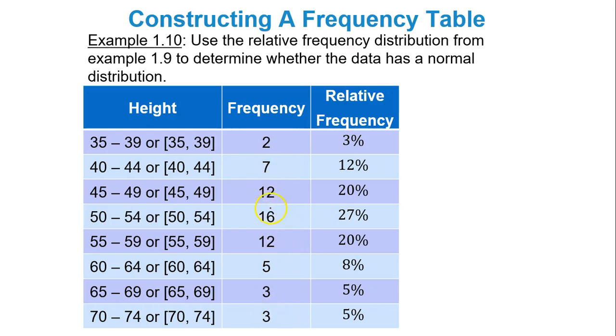Yes, 2, 7, 12, 16, 12, 5, 3, 3. Next, if you look at your peak, which is 16, your highest frequency, which is 16, do the frequencies for the classes below the 16 mirror those frequencies for the classes above? Well, you got 12 and 12, 7 and 5, 3 and 2, and then you have this 3. I would say so. In a roundabout way, it looks like our data do have a normal distribution. So the answer here is yes.